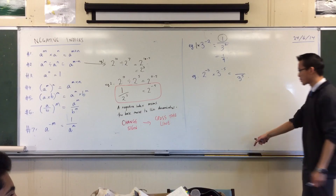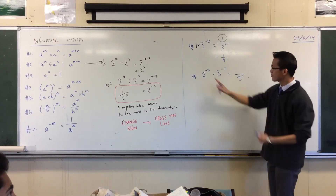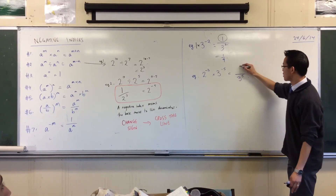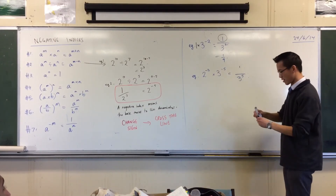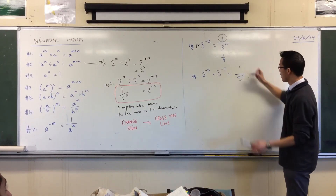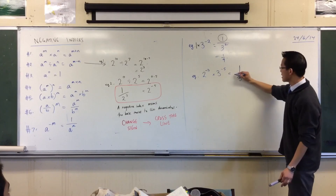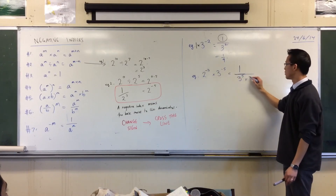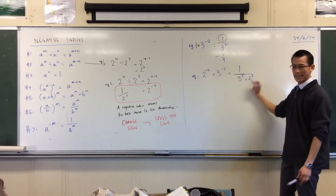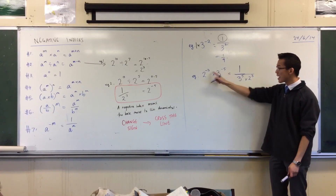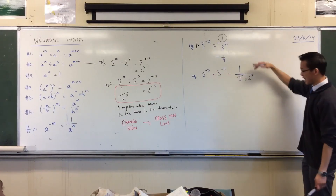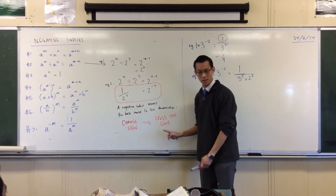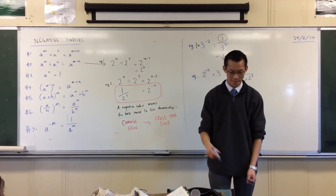Sorry. So what are we up to? You change this to a negative — that means it goes on the denominator as well, like that. All the negative indices, they get onto the denominator. Because you change the sign, you cross the line.